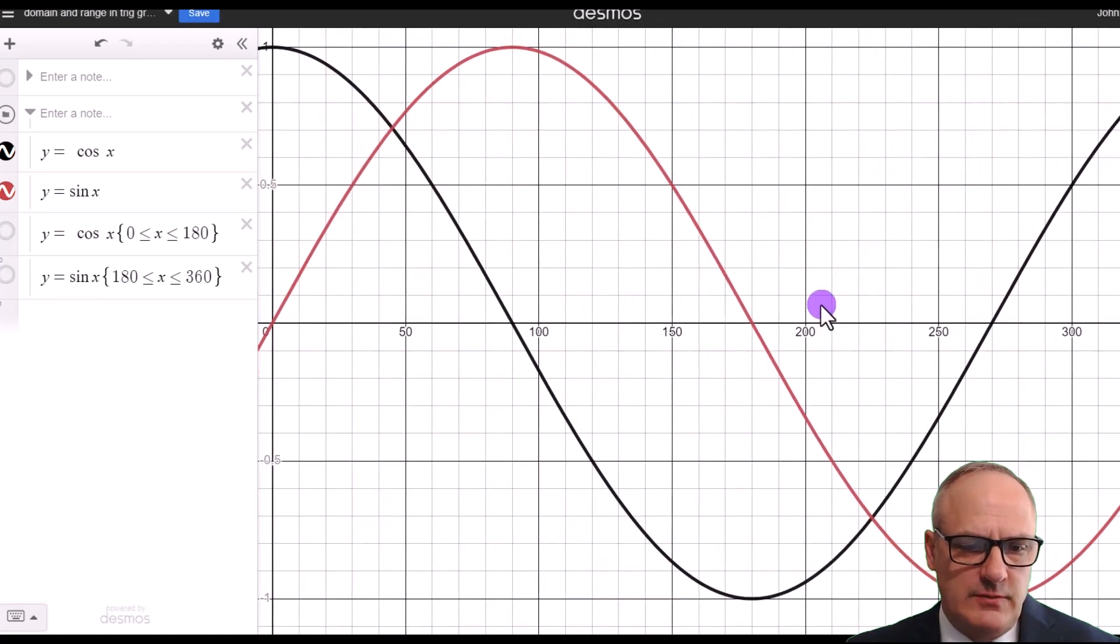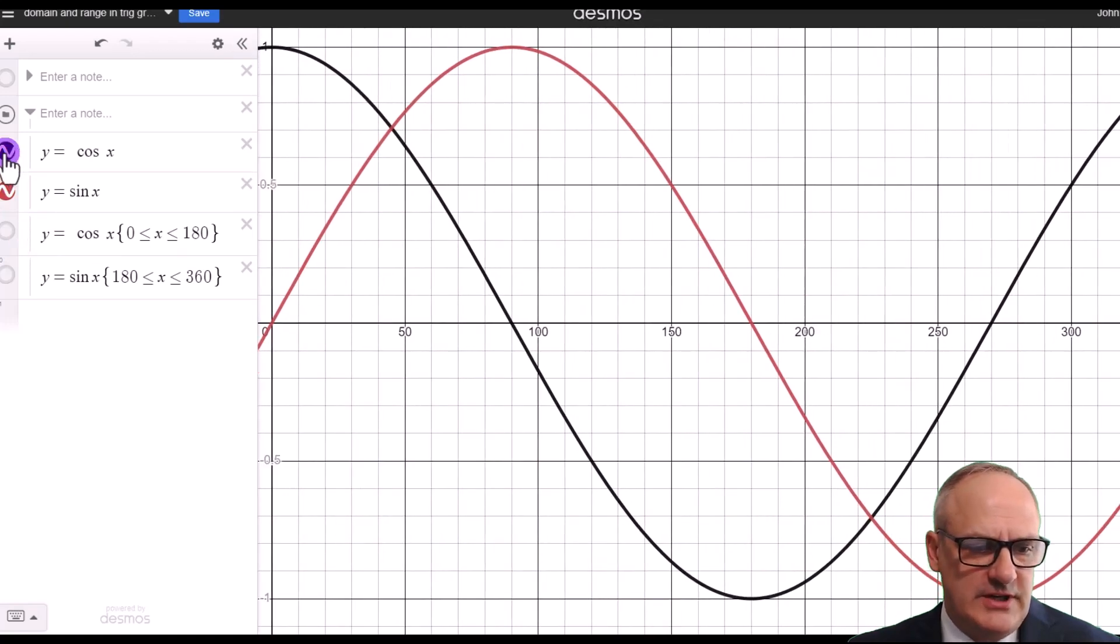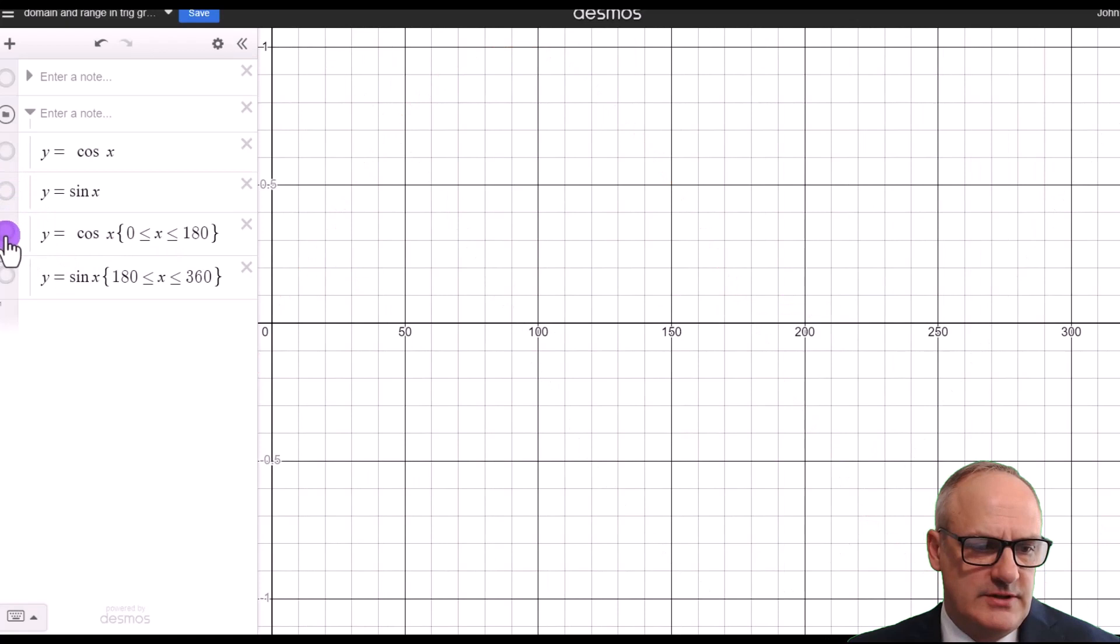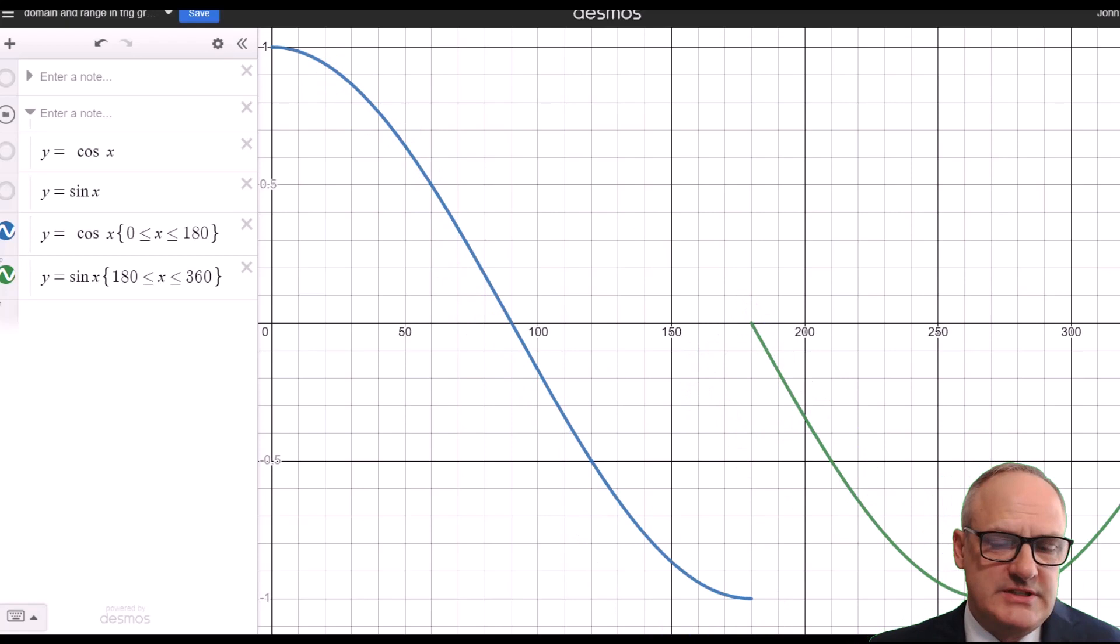But if you do specify what x values to put in, so if we take the ones from the question, we get rid of these graphs and we just define that the cos curve is just between 0 to 180 and the sine curve just goes from 180 to 360. Like they are in the question, you can see what we draw is very different. It's limited.